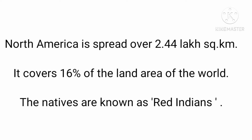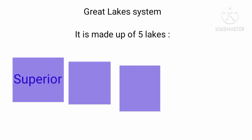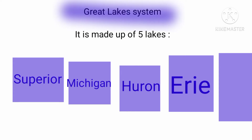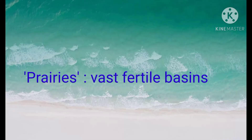The natives of North America are known as Red Indians. The Great Lakes system is made up of five lakes: Superior, Michigan, Huron, Erie, and Ontario. The Great Lakes contain one-fifth of the world's fresh surface water, making them the largest system of fresh water on earth. Prairies means vast, fertile basins.